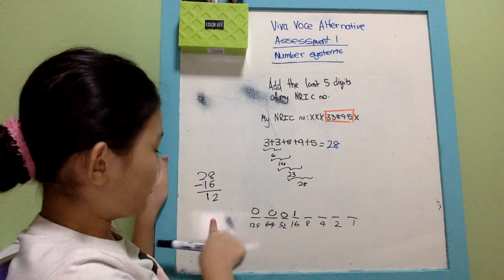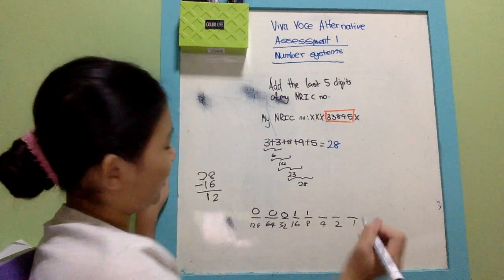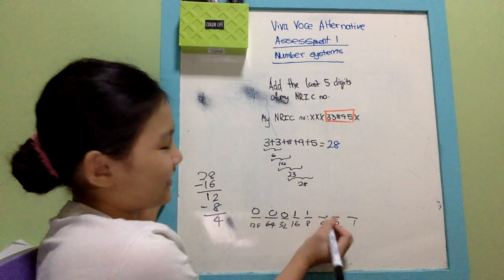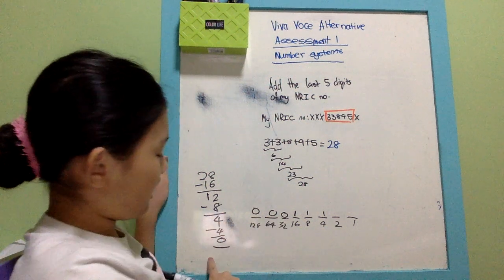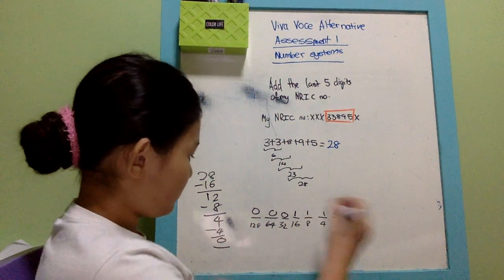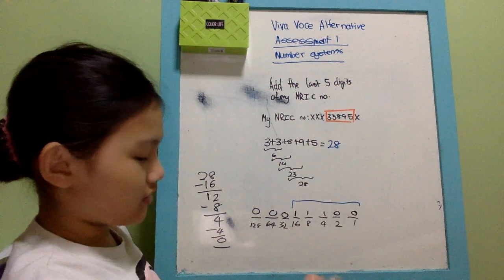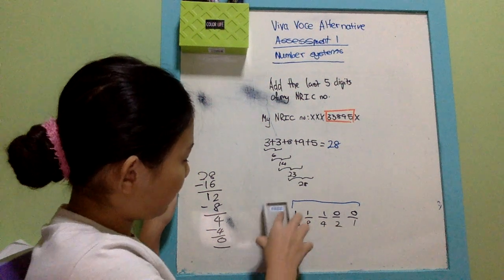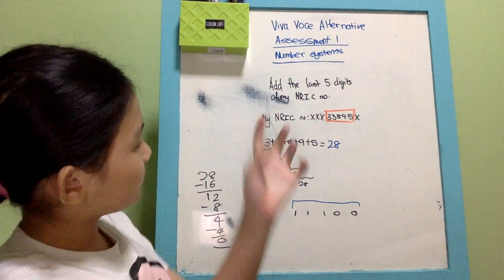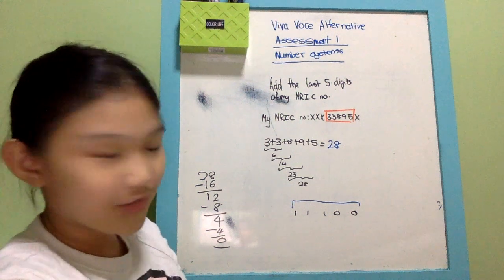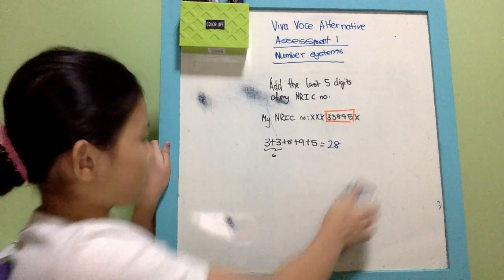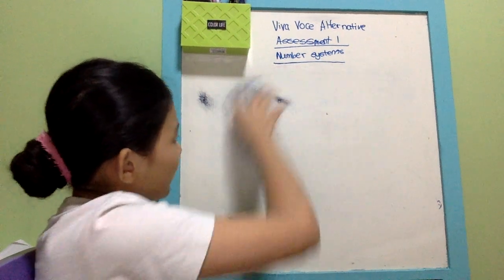After subtracting 16 from 28 you get 12. Can 8 fit into 12? Yes — put a one, then subtract to get 4. Can 4 fit? Yes — put a one, subtract to get 0. The remaining values can't fit into 0, so you put zeros for those. Reading from the first '1' onward, that is your answer. So this completes Task 1: adding the last five NRIC digits and converting the result to binary. This answer is called number XX, which is needed for Task 2.